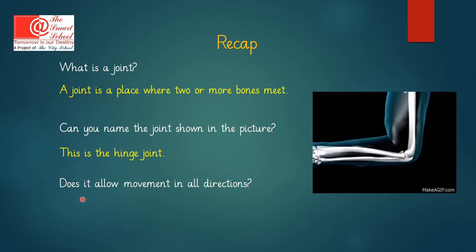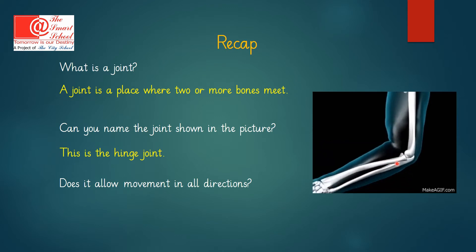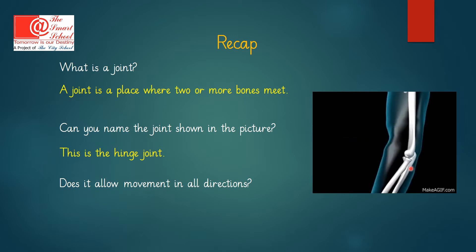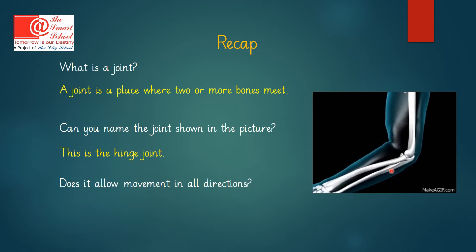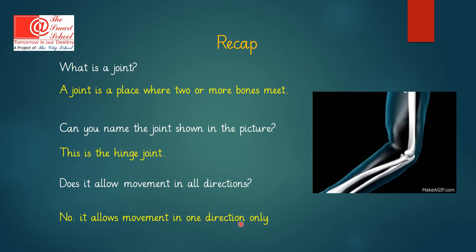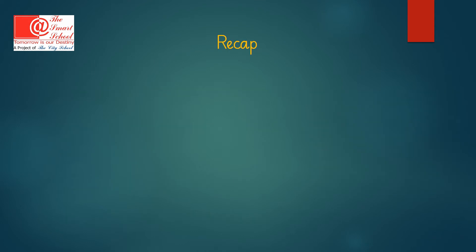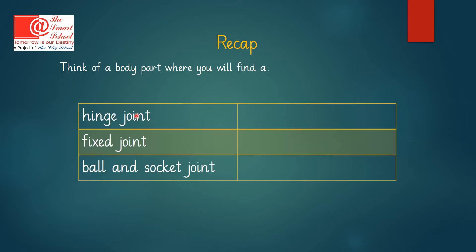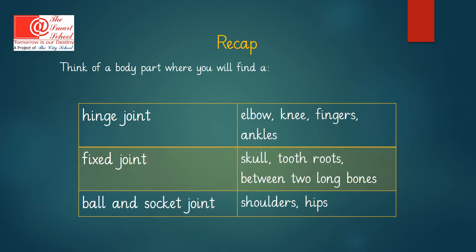What type of movement do you see in this Joint? Is it in all directions or only in one direction? The Hinge Joint allows movement in one direction only. Think of a body part where you will find a Hinge Joint. You will find Hinge Joints in Elbows, Knees, Fingers, and Ankles.